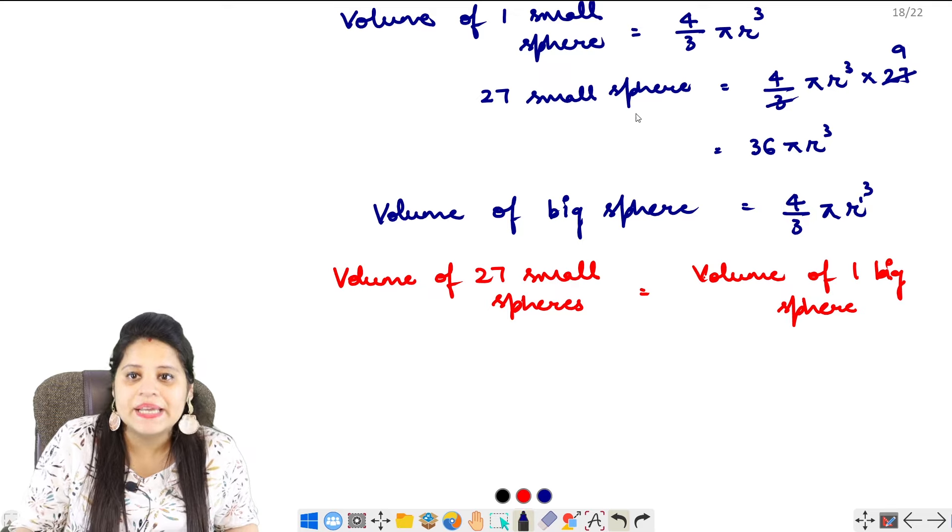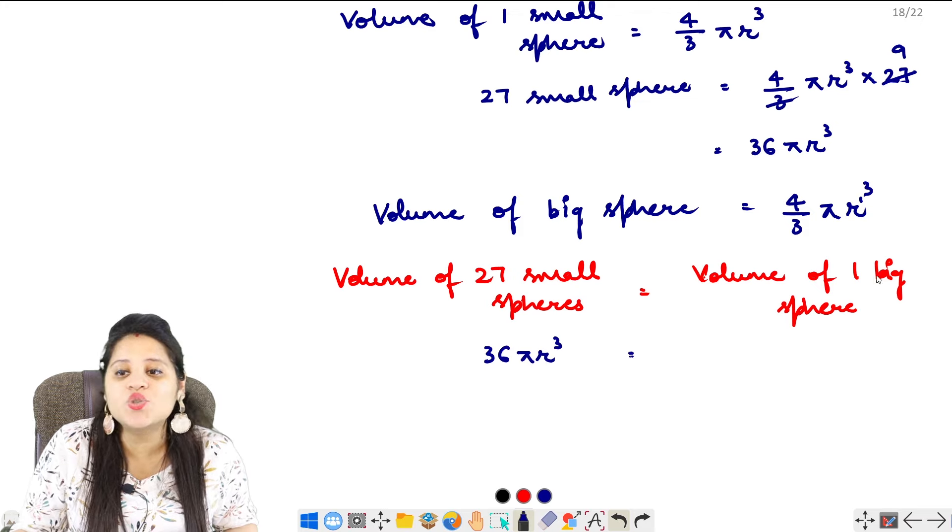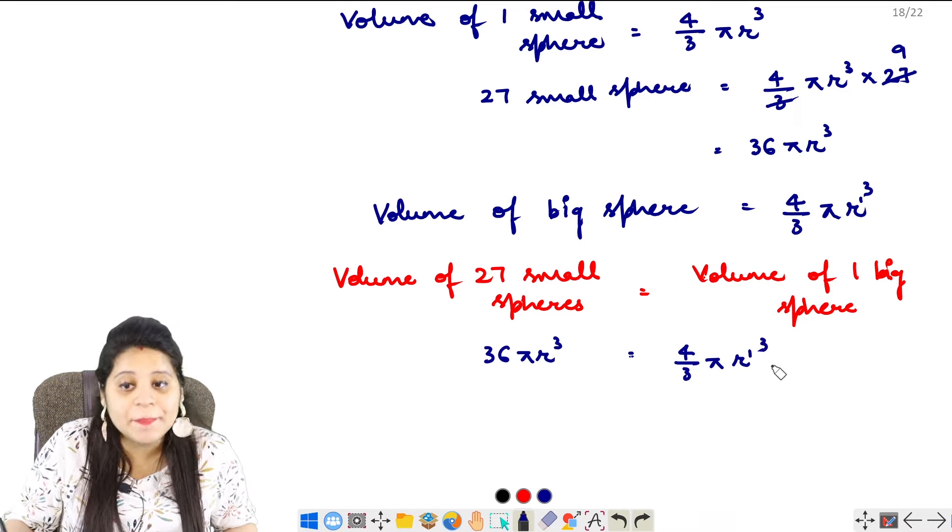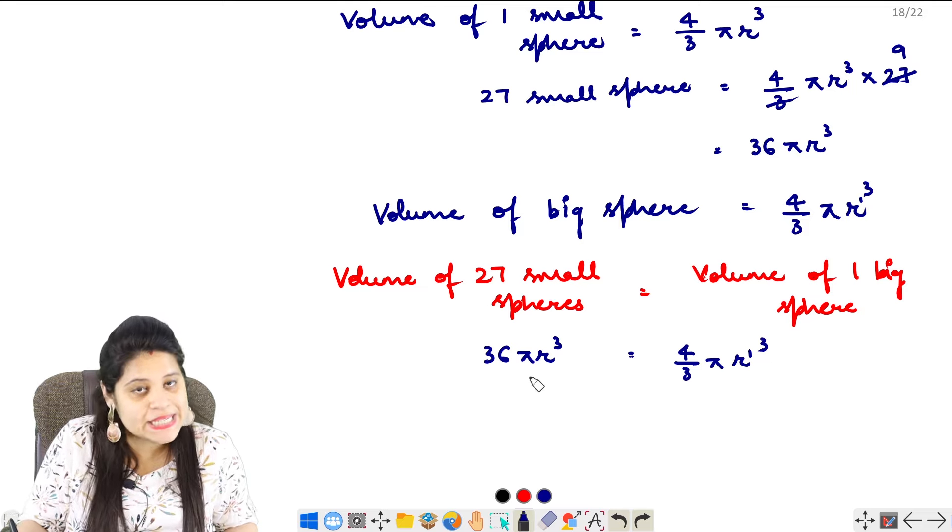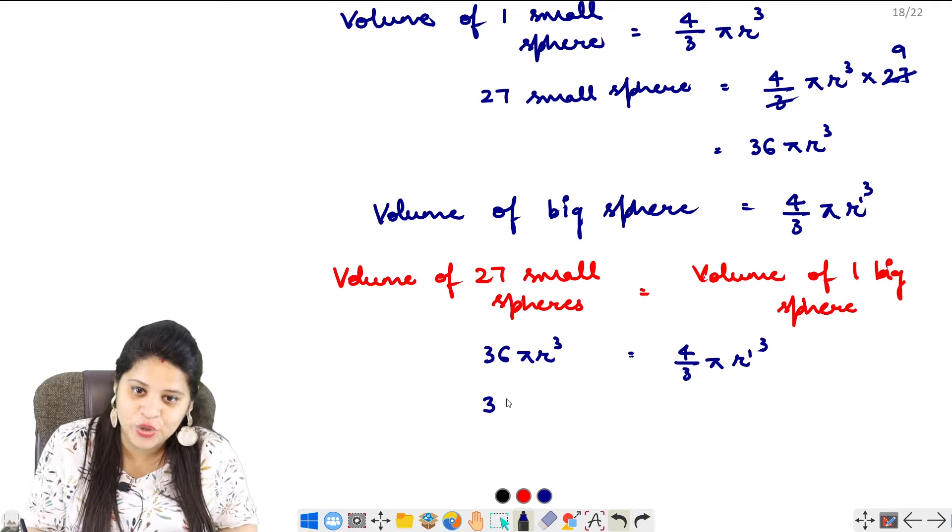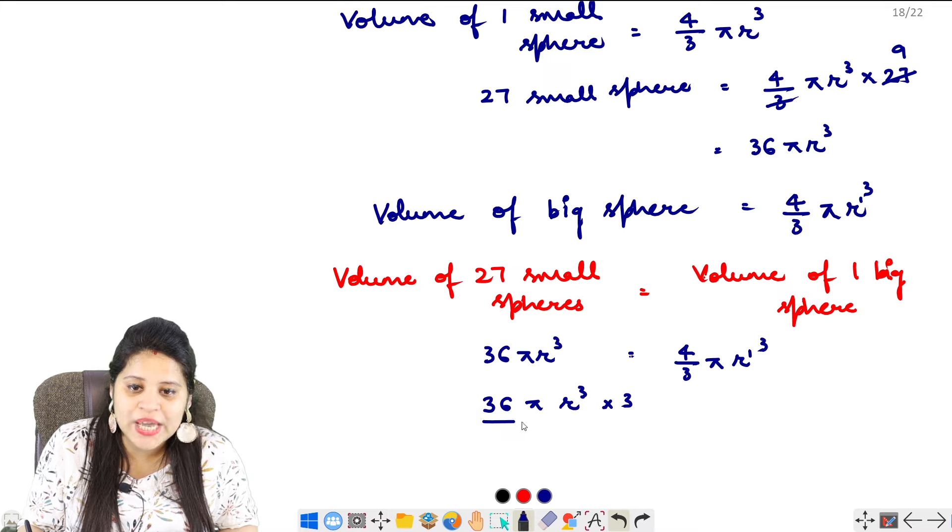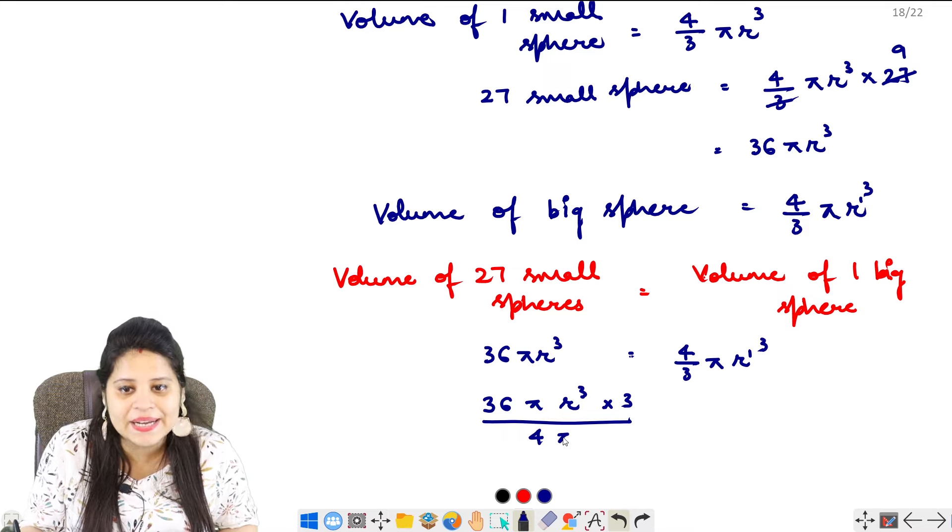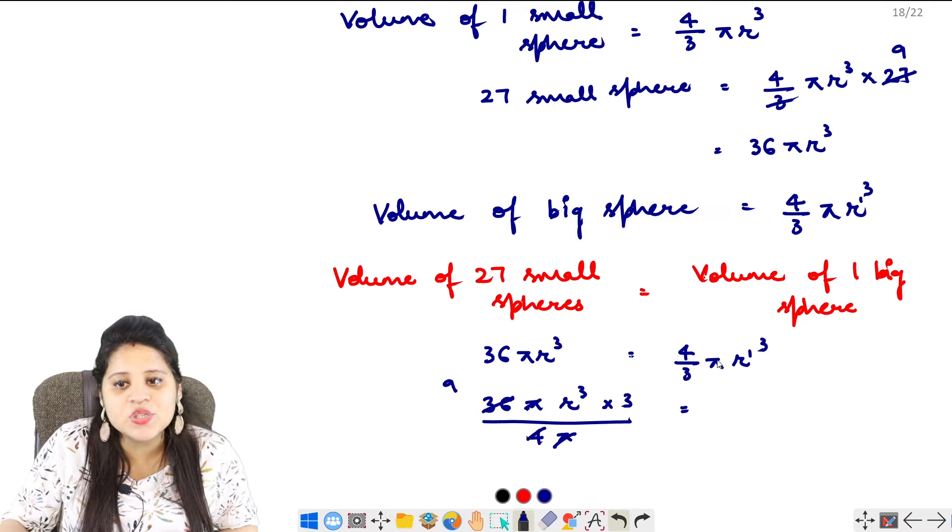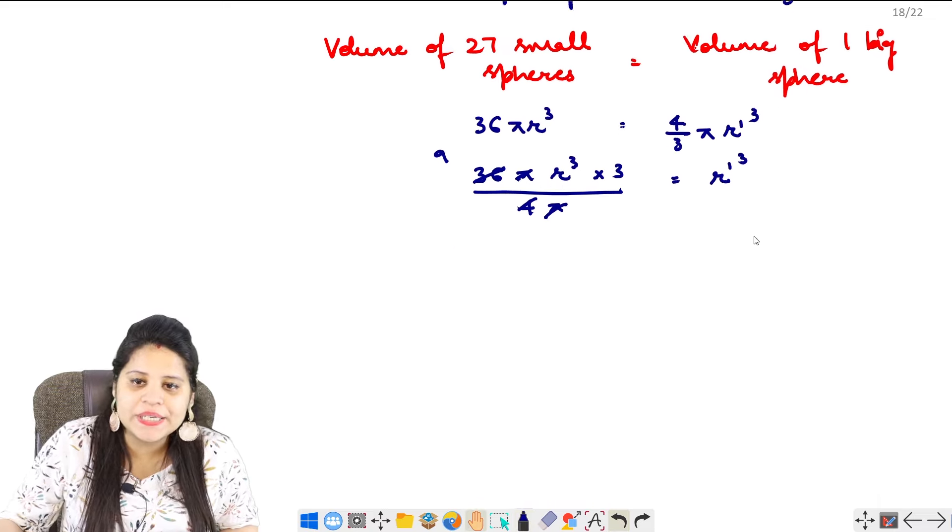So, the volume of 27 is 36 pi r cube, equal to 4 upon 3 pi r dash cube. Now, if I cancel terms here - pi cancels with pi, and we can simplify.